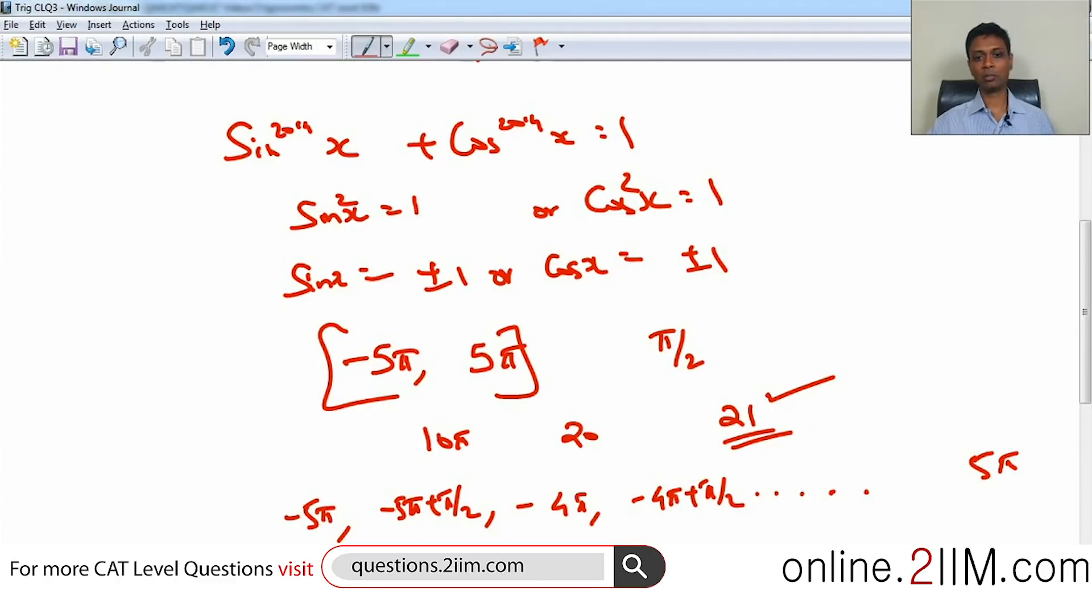So wonderful question. But remember, this question is solvable only because it is sin^2014(x) plus cos^2014(x). If it is sin^2015(x) and cos^2015(x), then we will have to worry only about the plus 1s. We will have to ignore the minus 1s. It becomes slightly more tricky. We will have to be careful about that. So because it is even power, I do not care whether it is plus 1 or minus 1. I am counting everything out there. So there are 21 different points where they will be satisfied. Absolutely fabulous question.